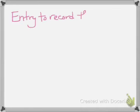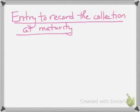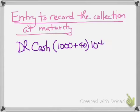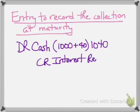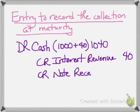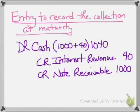What's the entry to record the collection at maturity? Six months later, on September 1st, we debit cash for $1,040 — that's $1,000 of principal plus $40 of interest. We credit interest revenue for $40, because we've earned interest. And we credit notes receivable for $1,000, because we no longer have that note — that asset is going away since we're collecting the cash.